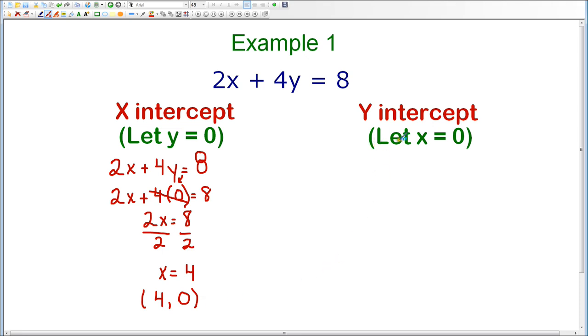Now I'm going to find the y-intercepts by doing the same exact thing, except this time I'm going to let x equals 0 because I'm finding the y-intercepts. So I'm going to replace x with 0 and bring down the rest of the equation. I know that 2 times 0 is 0. That's eliminated. Therefore, I'm left with 4y equals 8.